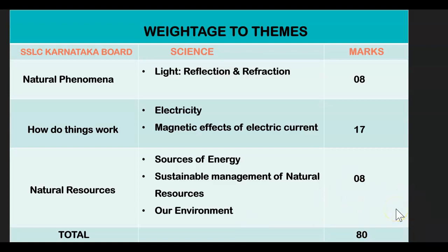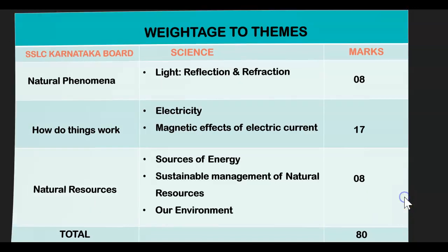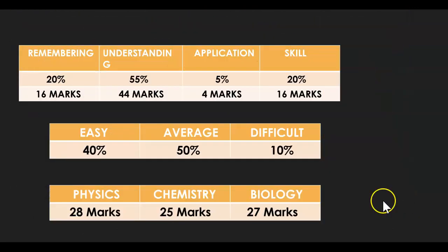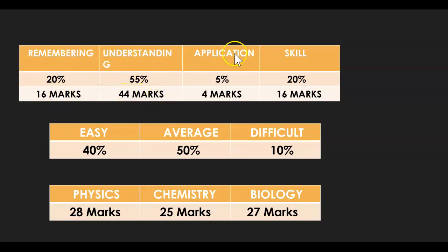So we have given brief information about the areas from which you can expect marks in your upcoming board exam. The cognitive level breakdown is: Remembering 20% (16 marks), Understanding 55% (44 marks), Application 5% (4 marks), and Skill 20%. Skill means drawing — you have to draw diagrams. Totally, drawings are for 16 marks.